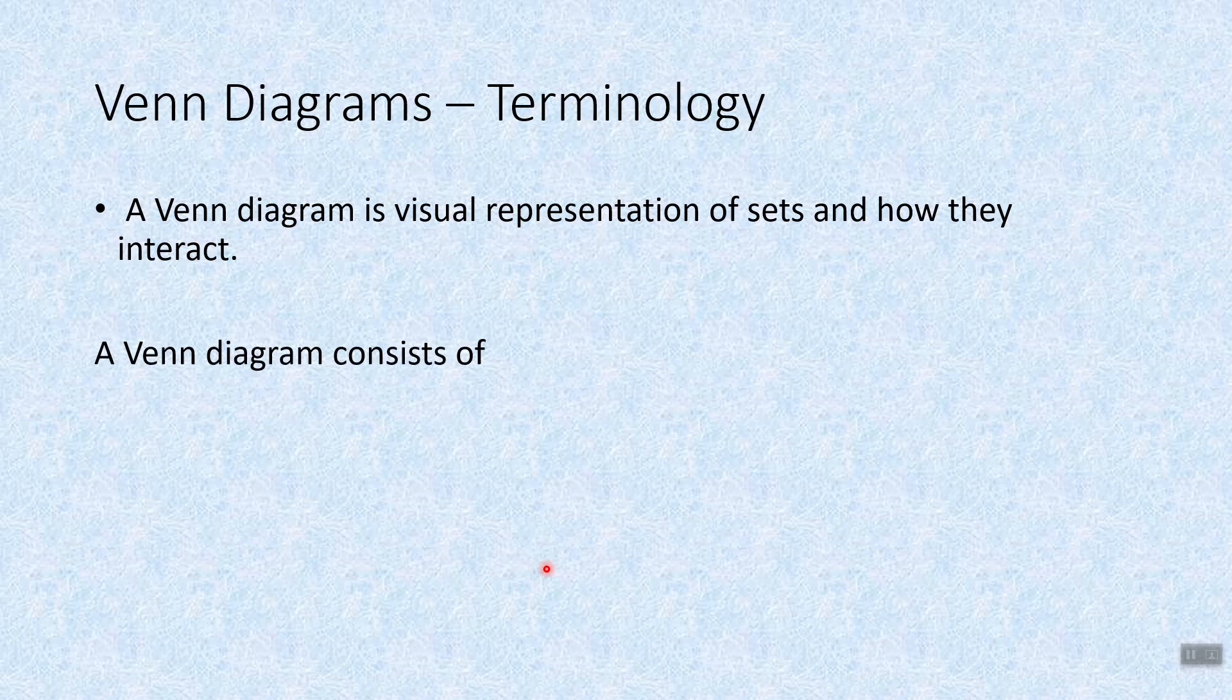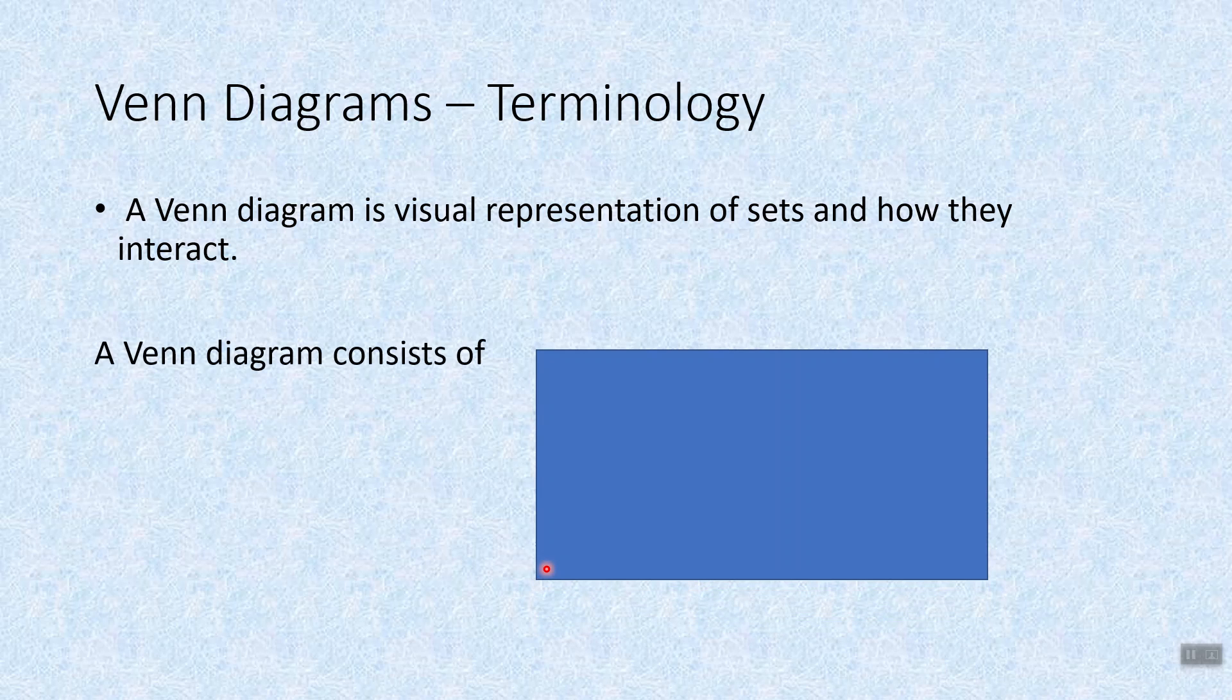A Venn Diagram consists of a universal set. This is everything that's under consideration. We'll either call it a U or we'll call it an S. We're going to use S for the most part. This is all sets, all elements, all everything under consideration in this rectangular window.